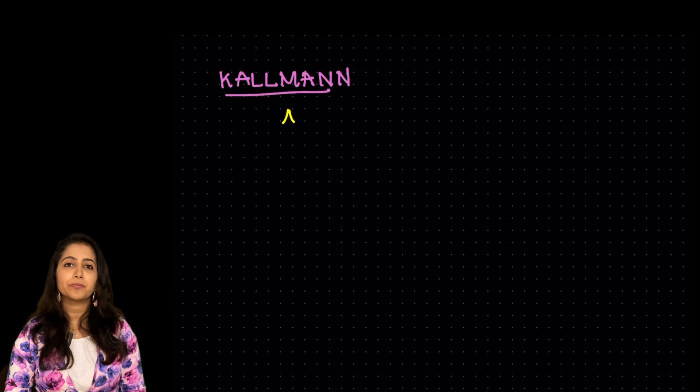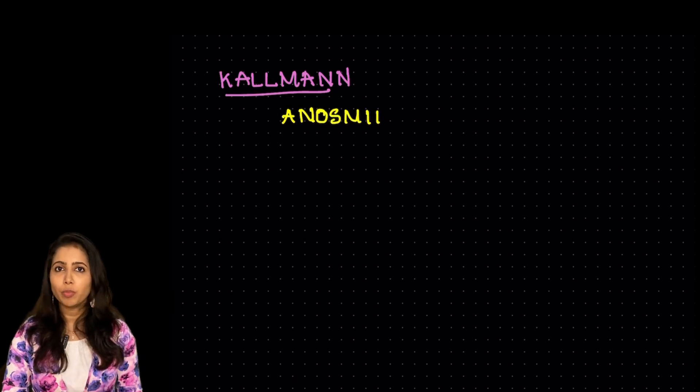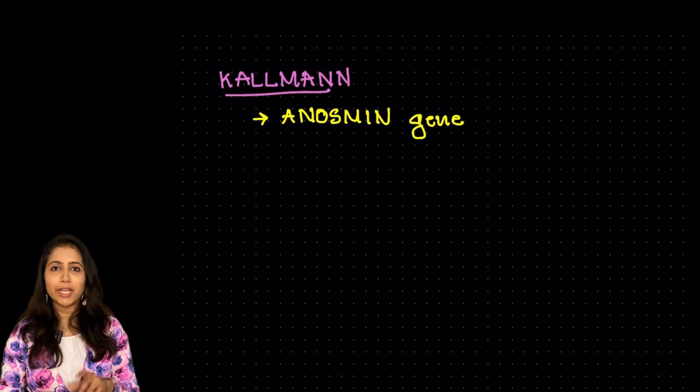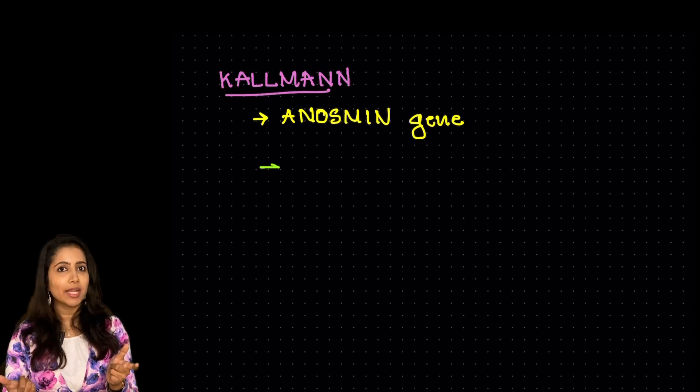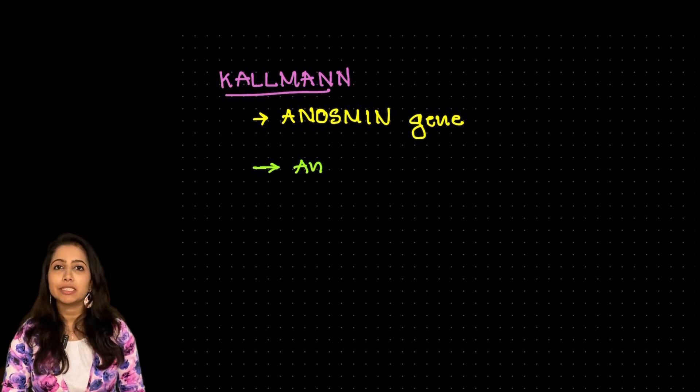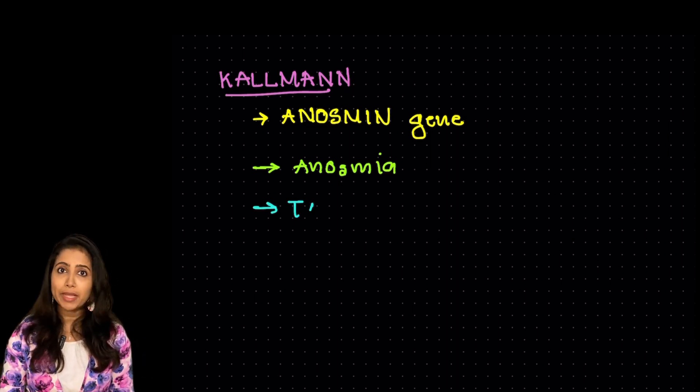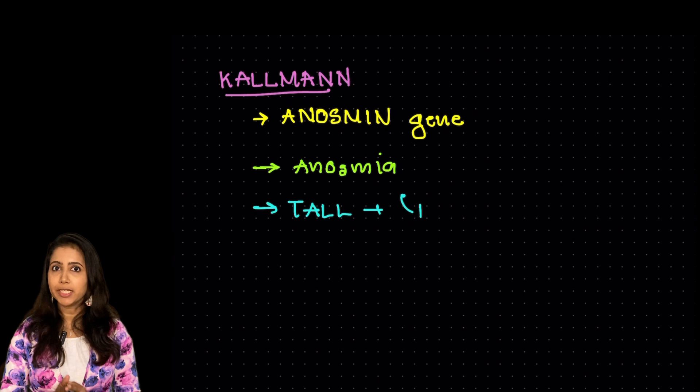Let's discuss in detail about Kallmann syndrome. Though it is rare, it is still frequently asked as a question. So Kallmann syndrome is due to mutation in anosmin gene. So anosmin gene, anosmia. So a typical feature in this is anosmia. That is they have difficulty in perception of smell.